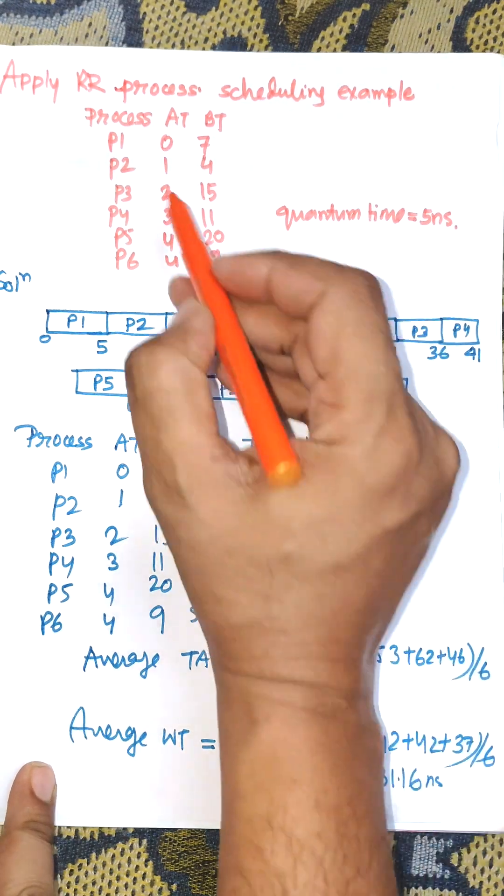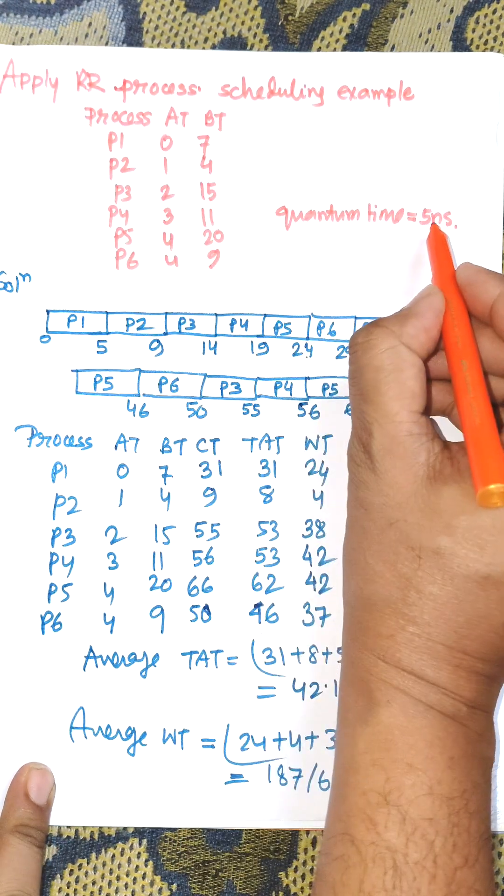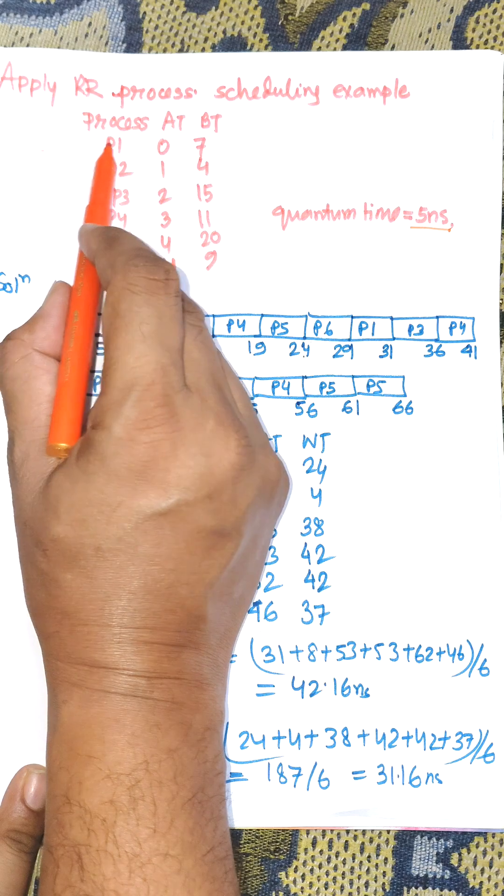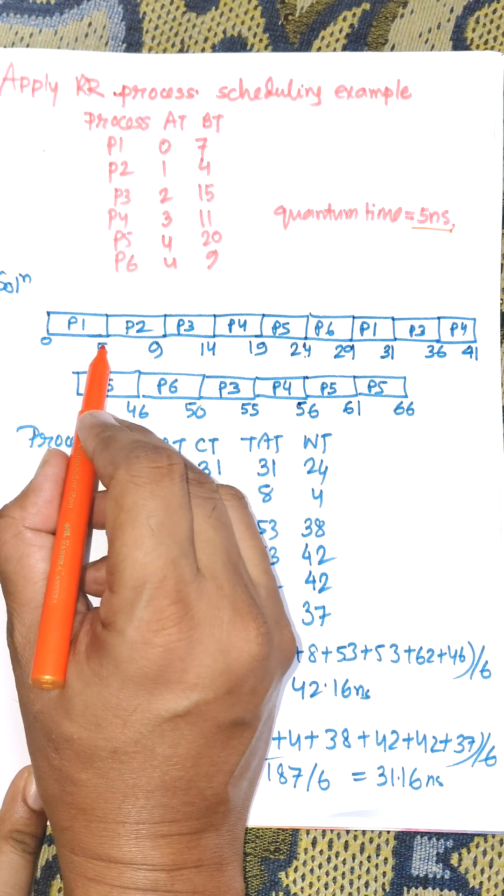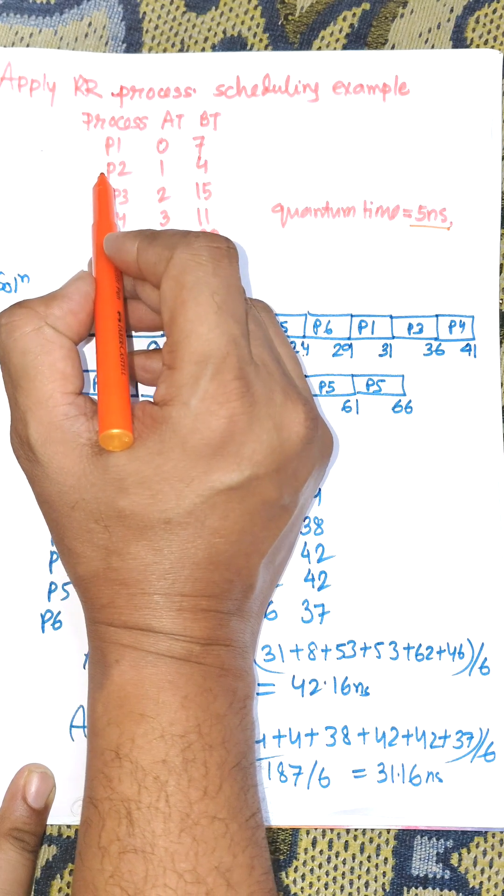Here there is a table given with process arrival times. The time quantum is 5 nanoseconds. The arrival time of P1 is 0, so P1 is selected and executed up to 5 nanoseconds. Then control goes to the next process.